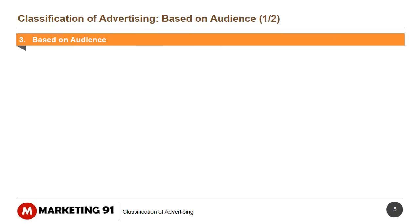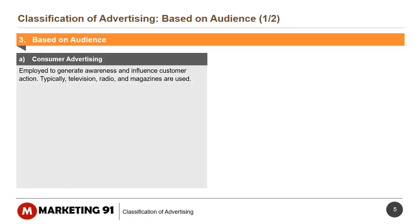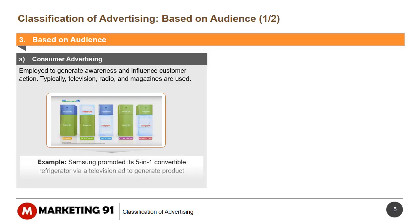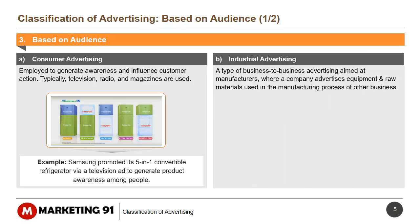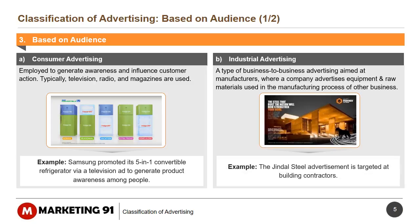The next classification is based on audience, which is subdivided into four classifications. Consumer advertising is employed to generate awareness and influence customer action. Typically, television, radio, and magazines are used. For example, Samsung promoted its five-in-one convertible refrigerator via a television ad to generate product awareness. Industrial advertising is a type of business-to-business advertising aimed at manufacturers, where a company advertises equipment and raw materials used in the manufacturing processes of other businesses. For example, the Jindal Steel advertisement is targeted at building contractors.